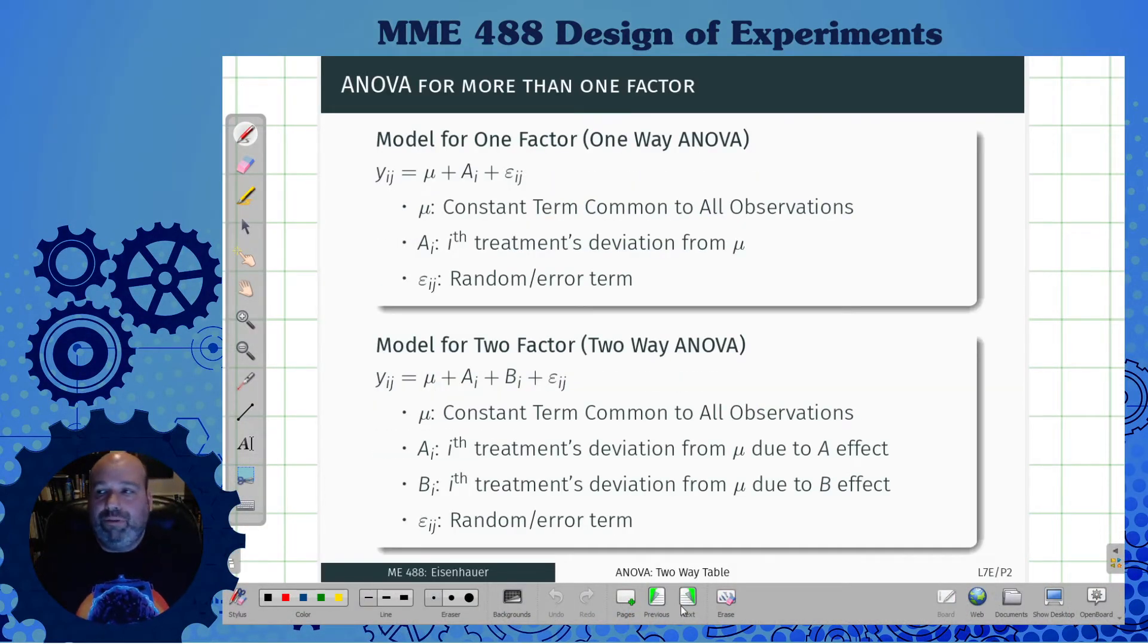So the idea was that for the model for the one-factor way ANOVA, just to kind of reiterate again, was that there was some value that you have of the output is equal to something that's in common to all observations, plus something that's due to this treatment's deviation from that kind of overall average, plus our general error that we've always talked about. And then so each of these treatments are going to have a different value here. We need to see if they're important or not.